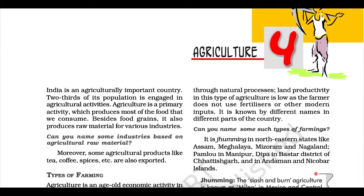Cropping Patterns. You have studied the physical diversities and plurality of cultures in India. These are also reflected in agricultural practices and cropping patterns in the country. Various types of food and fiber crops, vegetables and fruits, spices and condiments, etc. constitute some of the important crops grown in the country. India has three cropping seasons: Rabi, Kharif, and Zaid.